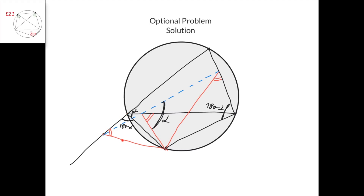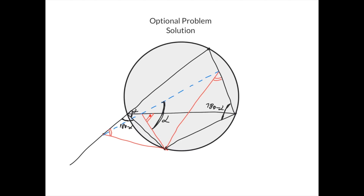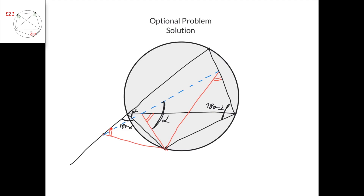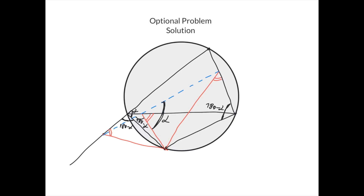Now notice that this quadrilateral here is also cyclic. If this angle is beta, then this angle is 180 minus beta, and this angle is beta, so the sum of opposite angles is 180 degrees — confirming it's cyclic. Therefore, because this angle is 180 minus alpha, this angle here would also be 180 minus alpha. So we have an angle alpha and an angle 180 minus alpha — these are supplementary angles that sum to 180 degrees. So this segment and this segment lie on the same line, because 180 degrees makes a straight line. That's how we proved the generalized Simpson line.